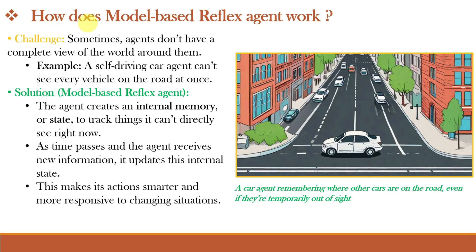Let's understand why Model Based Reflex Agents are required. In the real world, agents do not have complete knowledge of the world around them — that is, the world is partially observable. For example, a self-driving car agent can't see every vehicle on the road at once. For such complex scenarios, we need a Model Based Reflex Agent. Now let's understand how this Model Based Reflex Agent works.